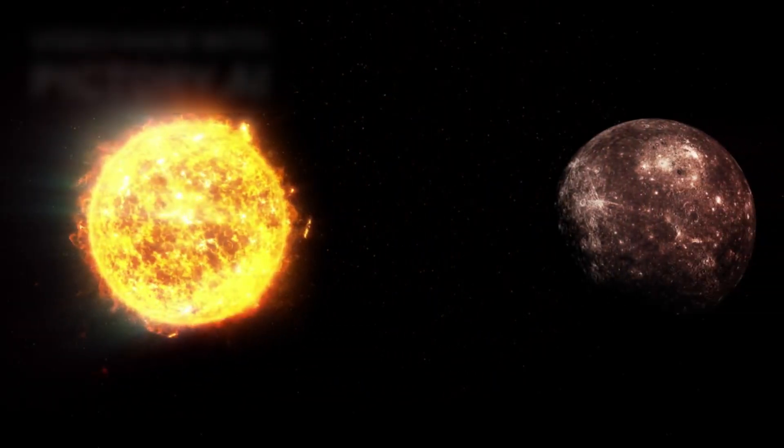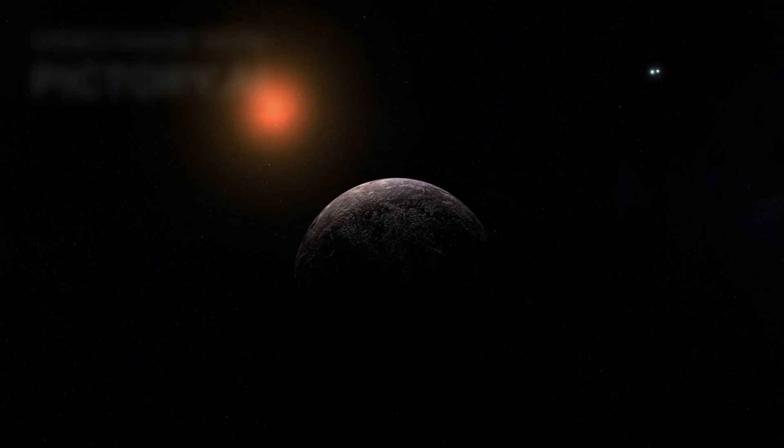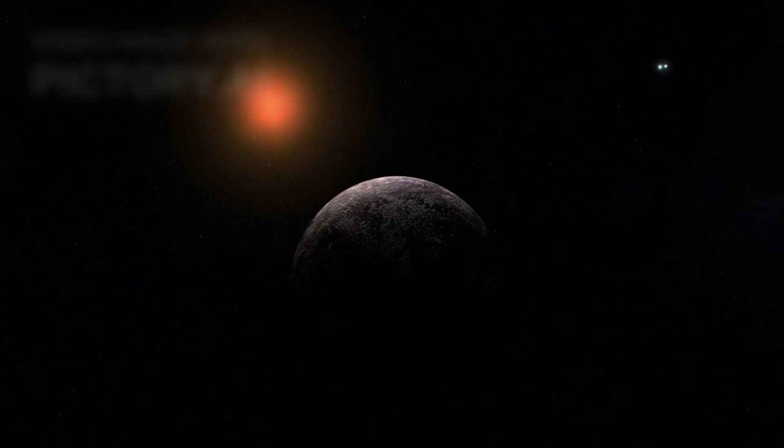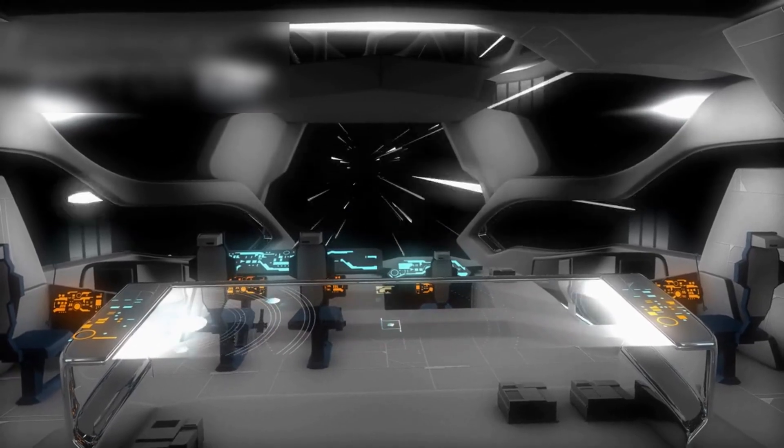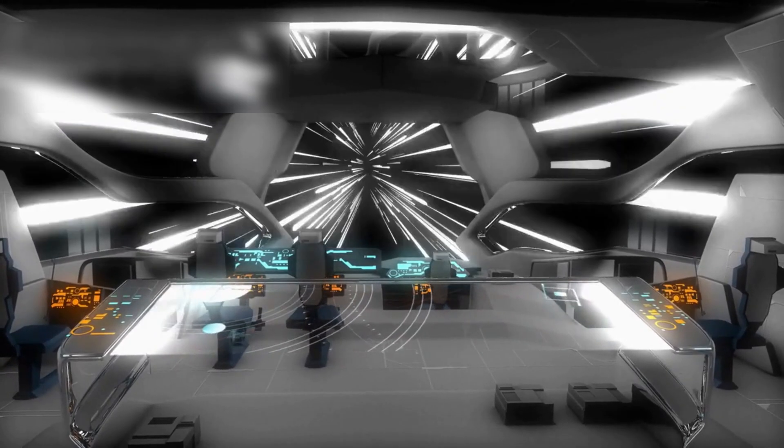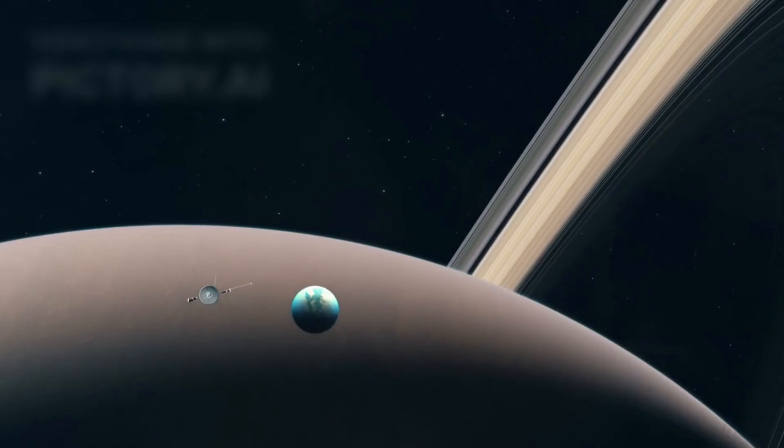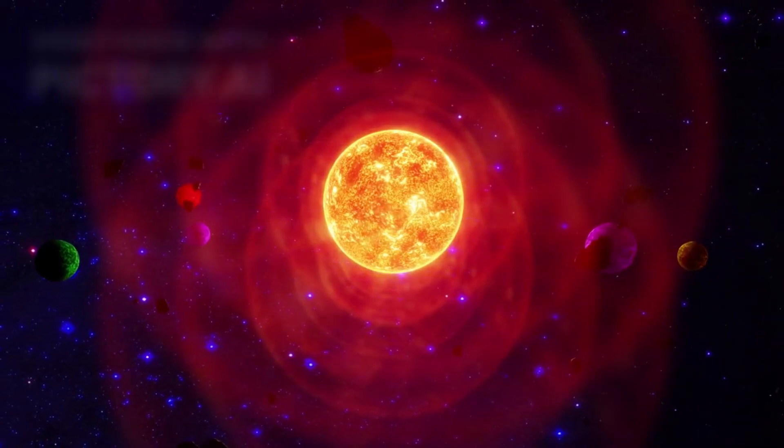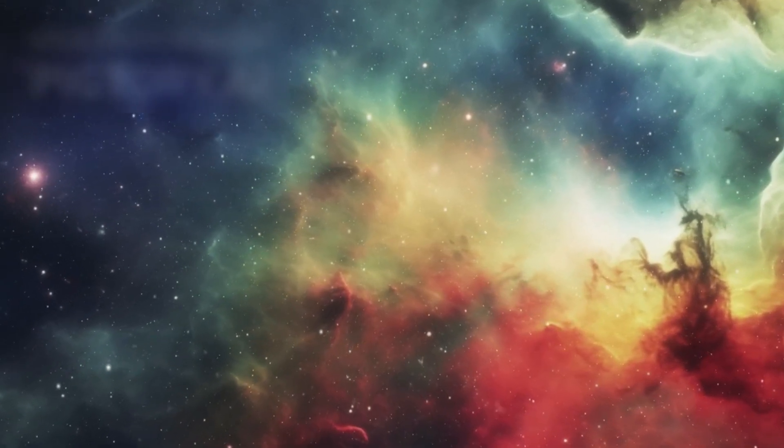But our solar system is minuscule compared to our galaxy. The Milky Way contains around 300 billion stars, many of which likely host their own systems of planets. Our nearest stellar neighbor, Alpha Centauri, lies 4.3 light-years away. Even traveling at light speed—about 186,000 miles per second—it would still take more than 4 years to get there. At Voyager speed, it would take a staggering 70,000 years. We are like a single ship adrift in an ocean so large that even the nearest harbor is thousands of lifetimes away.